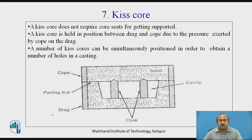Kiss core. A kiss core does not require a core seat for getting supported. It is held in position between the drag and cope due to the pressure exerted by the cope on the drag. A number of kiss cores can be simultaneously positioned in order to obtain a number of holes in the casting.